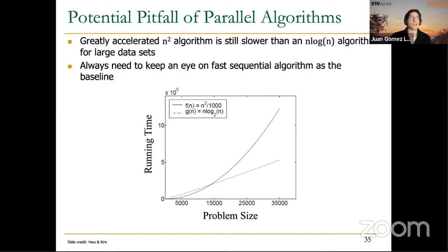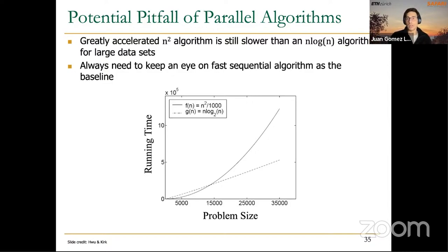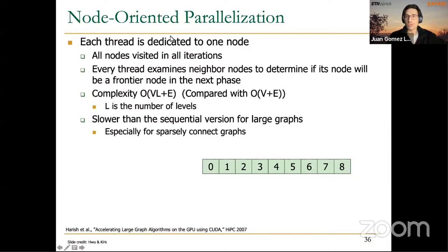We are going to see a couple of examples that fall into this quadratic complexity problem. One possible implementation is to statically assign one thread to each node — so all nodes are visited in all iterations, and in every iteration each thread examines the neighbor nodes to determine if each node will be a frontier node in the next phase.